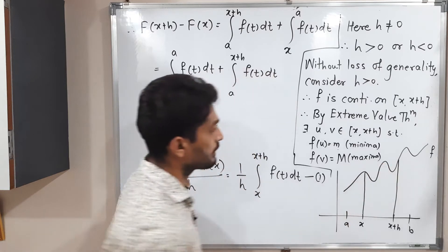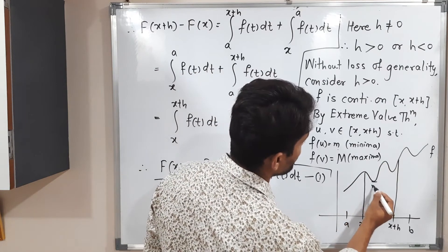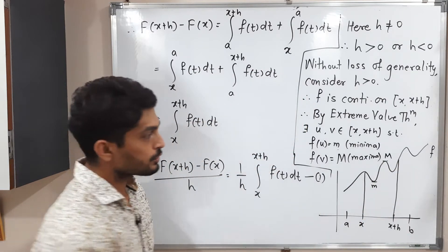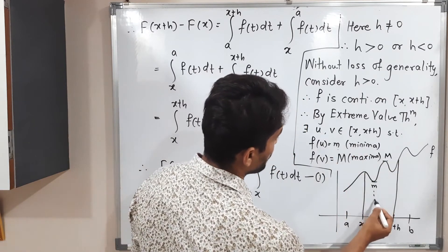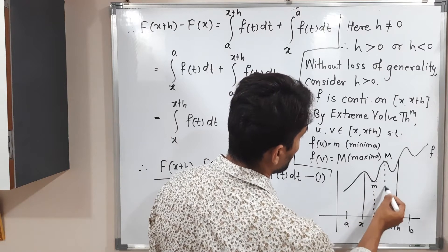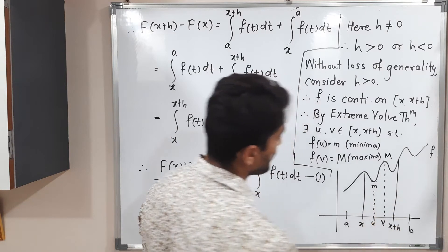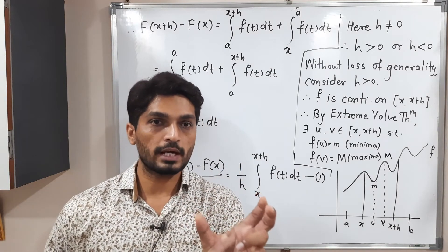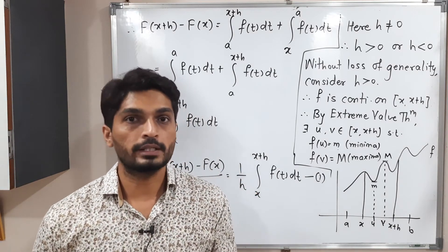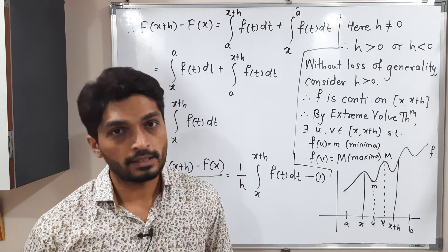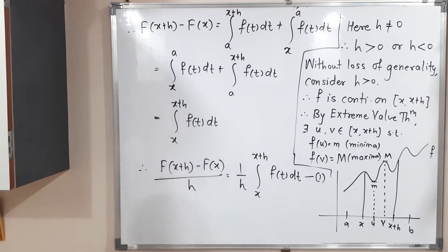So in the domain [x, x + h], the function has a minimum value m achieved at point u, and a maximum value M achieved at point v, as shown in the diagram.